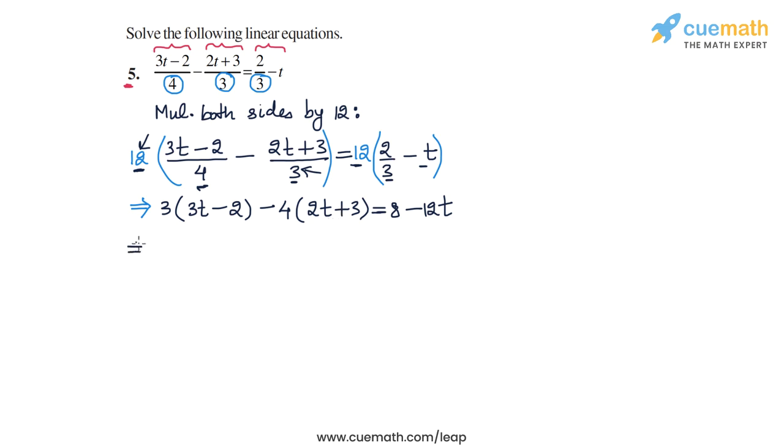Now let's expand the products that we have. So we have 3 into 3t, that's 9t, minus 3 into 2, so that's minus 6, and then we have minus 4 into 2t, so minus 8t, and minus 4 into 3, that's minus 12, and on the RHS, we have 8 minus 12t.